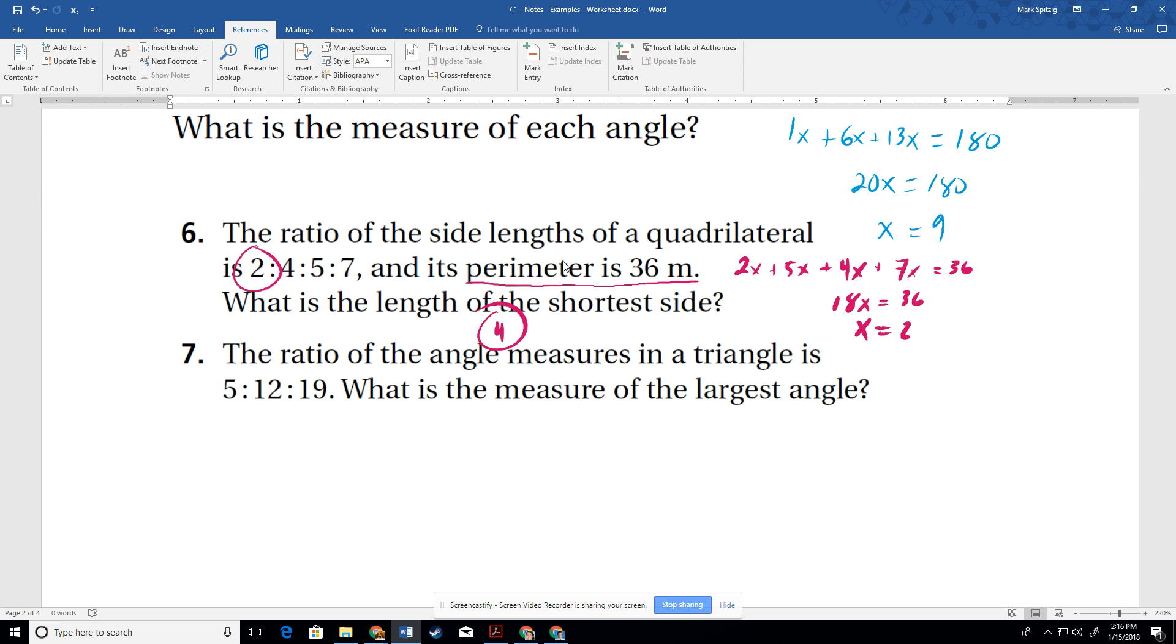All right. The ratio of the angle measures in the triangle. So we know those add up to 180. And in this case, we have the three angles are 5 to 12 to 19. So 5x plus 12x plus 19x. Just adding them up. 5, 12, and 19 is 36. 36 total parts. And then has to add up to 180. So we divide by the 36 and we get 5. So we get each part is 5. And so the largest angle was the 19. So in this case, 19 times 5 is 95. So that would be our angle right there is 95.